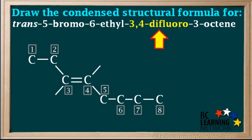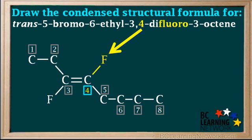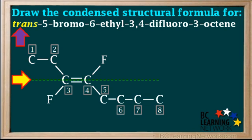We can now start adding groups to the chain. 3,4-difluoro means there are fluorine groups attached to carbons three and four, so we add a fluorine group to carbon three and to carbon four. The fact that this is the trans isomer is further supported by the placement of the two fluorine atoms. If we draw a line through the double bond, we see that the two fluorine atoms are across the double bond from each other. Because two identical groups are across the double bond from each other, this is the trans isomer.